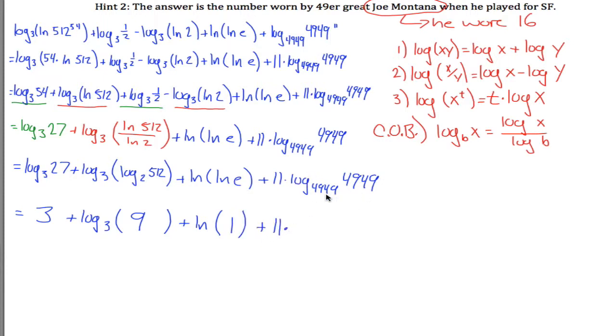And then same idea here. This is saying what power do you have to raise 49, 49, 49, 49 to to get 49, 49, 49? Well, just raise it to the first power. It's already that thing. Log base 3 of 9 is saying what power do you raise 3 to to get 9? 3 squared is 9. Natural log of 1 is saying e to what power equals 1? E to the 0 power is equal to 1. And then 11 times 1 is 11.